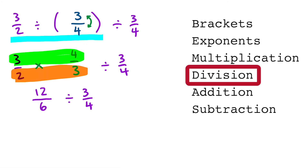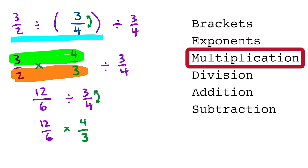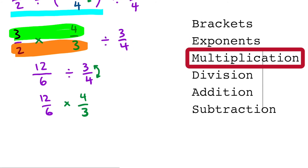We apply the same steps for the second division. We're going to take the reciprocal and flip the 3 and 4, and switch to a multiplying operation, so this is now going to be times 4 over 3. On the top, 12 times 4 is 48, and on the bottom, 6 times 3 is 18.